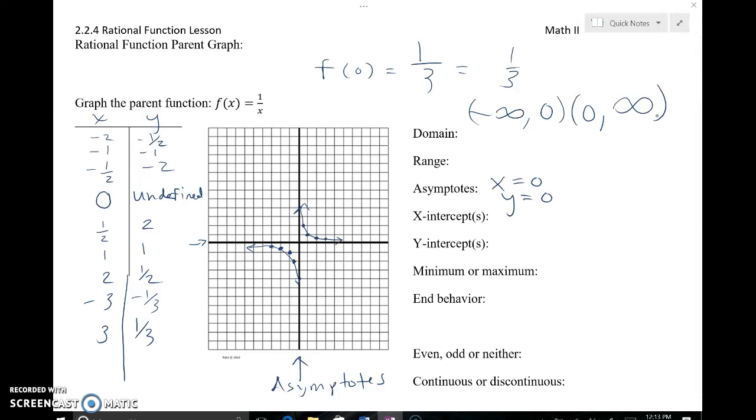My range is going to be very similar in that I never actually touch 0 on the x axis, or I never actually have a y value of 0. So negative infinity up to 0 seemed to be okay, and after 0 up to positive infinity seemed to be okay, but I can't actually touch 0.